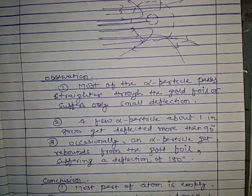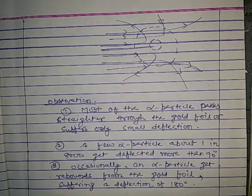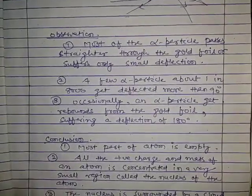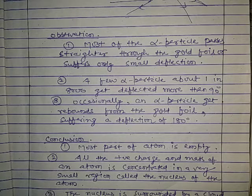The first observation states: most of the alpha particles pass straight through the gold foil or suffer only a small deflection. The second observation states: a few alpha particles — about 1 in 8000 — get deflected more than 90 degrees.